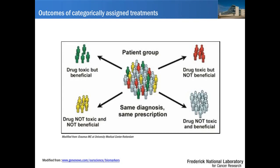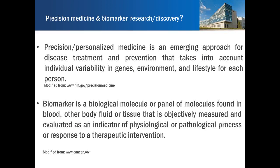That is basically an intro into precision medicine. Precision or personalized medicine is an emerging approach for disease treatment and prevention that takes into account individual variability in genes, environment, and lifestyle of each person. A biomarker is a biological molecule or panel of molecules found in blood, other body fluid, or tissue that is objectively measured and evaluated as an indicator of a physiological or pathological process, or response to therapeutic intervention.